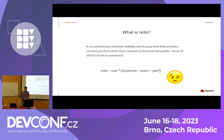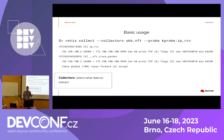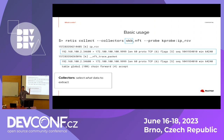Let's jump into how to use retis by looking at an example of its output. First, retis has something called collectors. Collectors tell retis what data to extract. For instance, the SKB collector collects information from the sk_buff — that line resembling tcpdump output is what the SKB collector generated. We also have the NFT collector, which generates a line showing the nftables chain verdict.